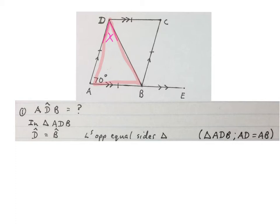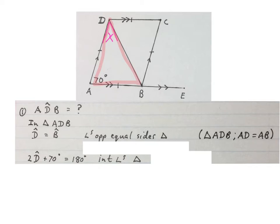Some students write: in triangle ADB, AD is equal to AB. Now we can say 2 times angle D plus 70 degrees is 180 degrees, interior angles of a triangle.